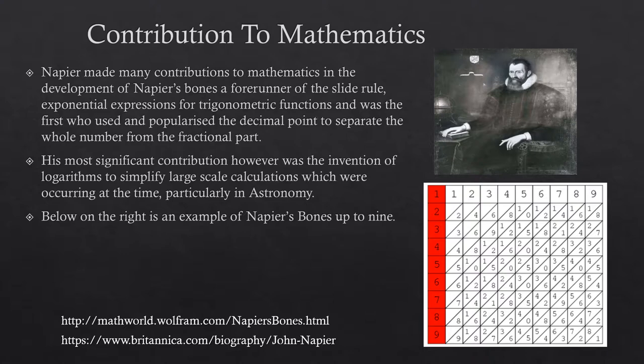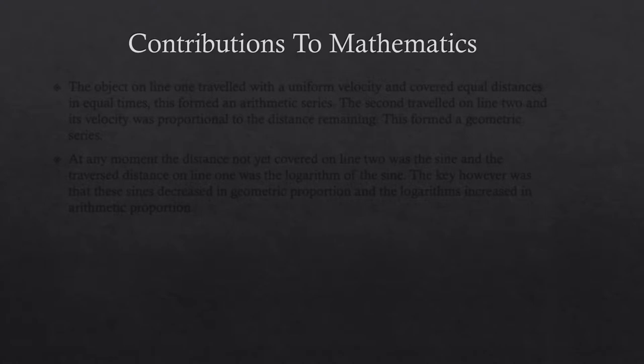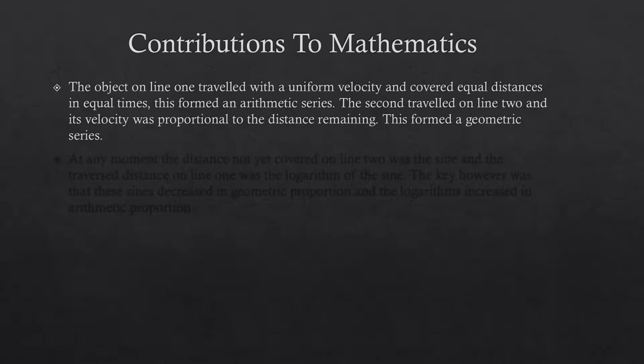Napier's definition of logarithms considered two objects traveling along parallel lines. Line 1 was of infinite length, and line 2 was of a fixed length. These two objects would start from the same position, moving horizontally at the same time, with equal starting velocity. The object on line 1 traveled with uniform velocity and covered equal distances in equal times. This formed an arithmetic series.